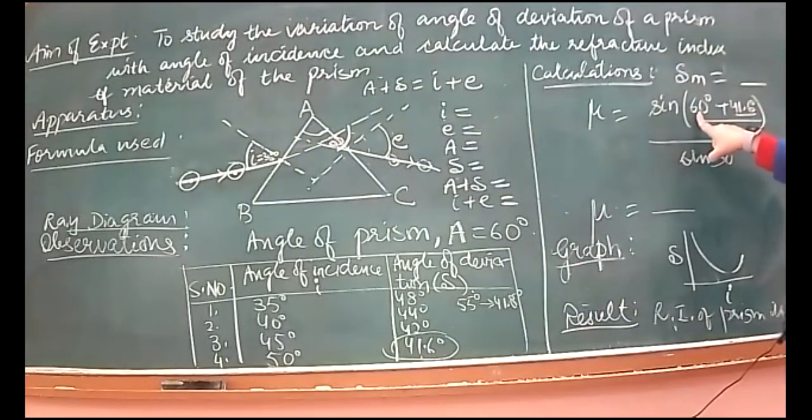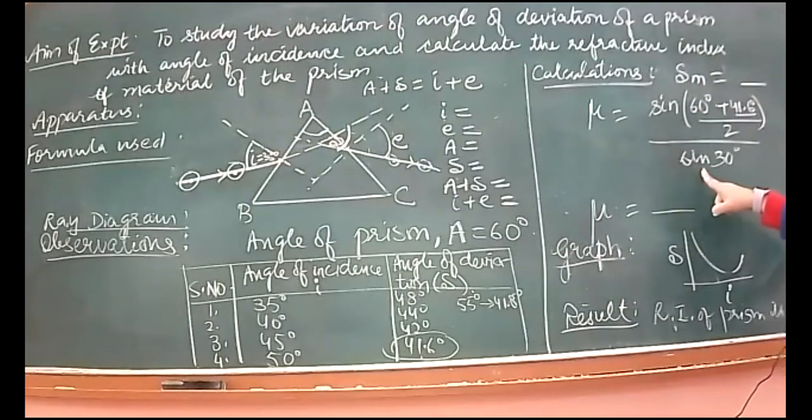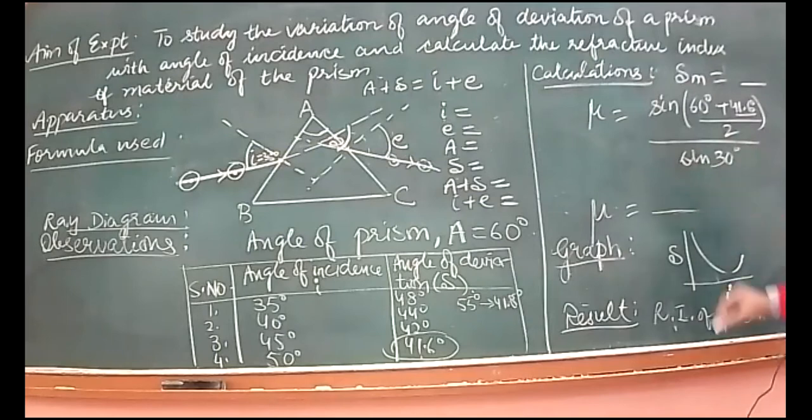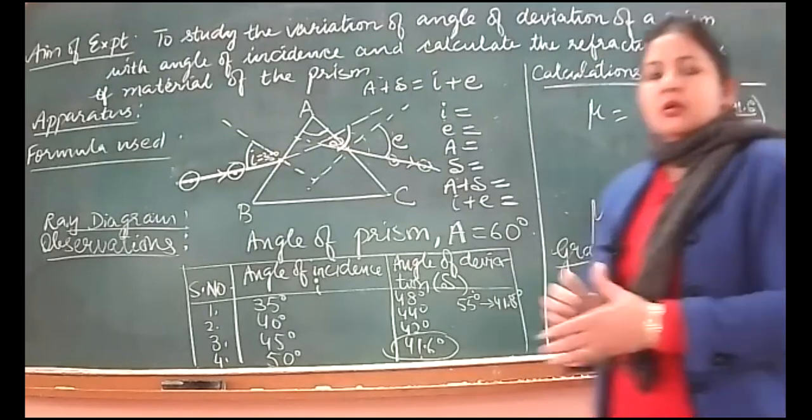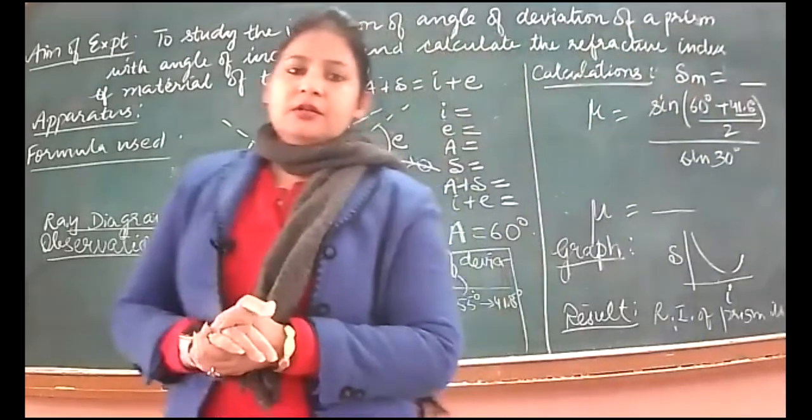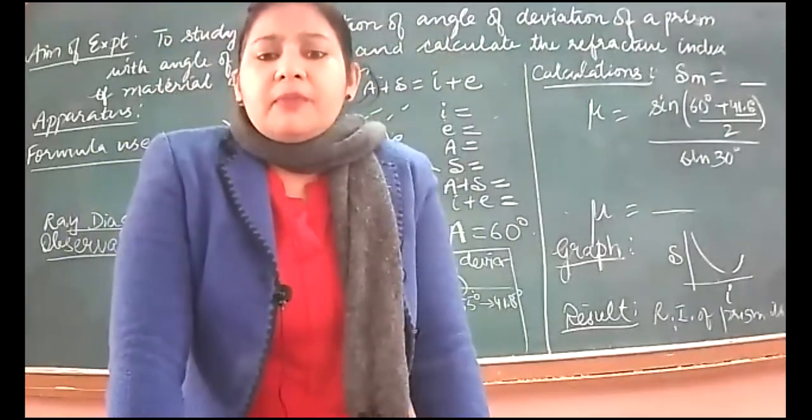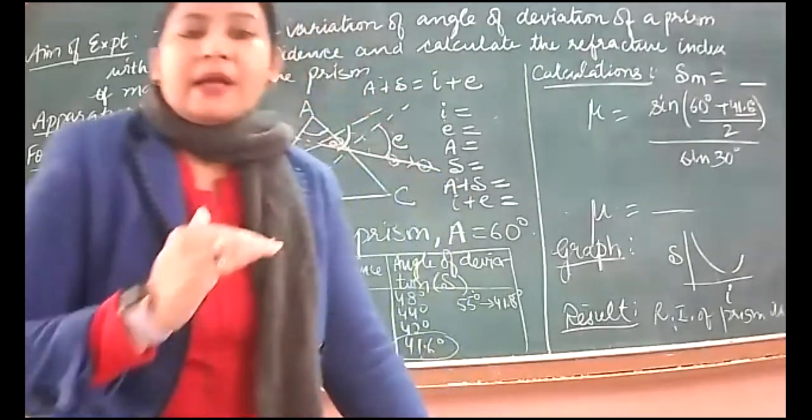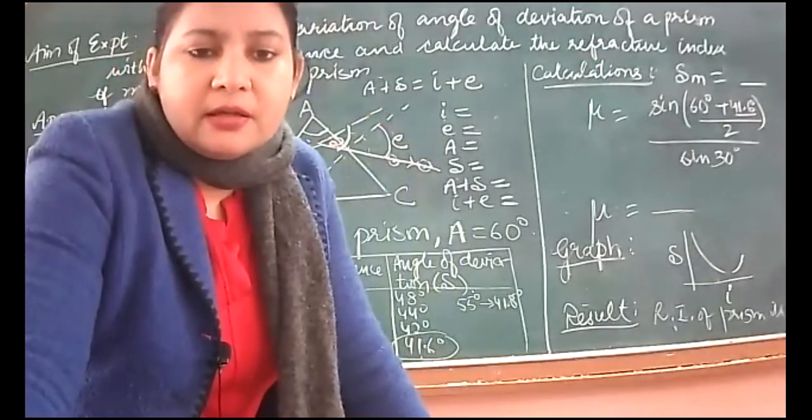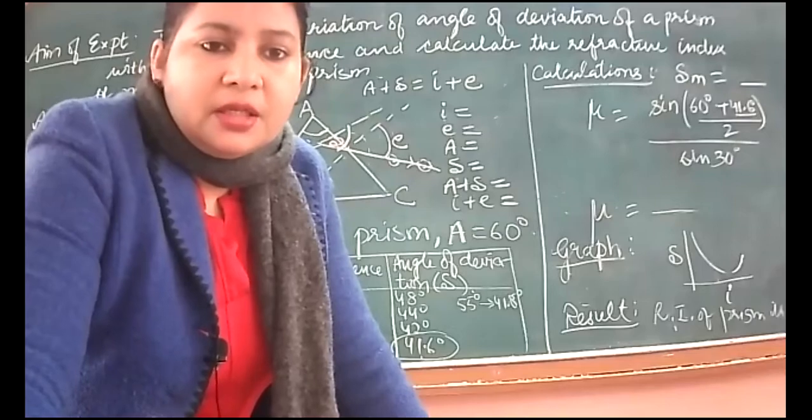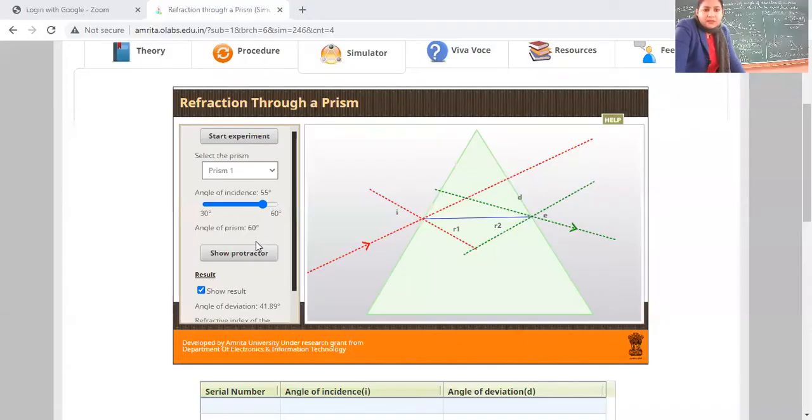So in this case we put 41.6 degrees. This gives 101.6 degrees over 2, and the sine value you can look up in the table, over sine 30 degrees which is 1 by 2. So in the calculation, you have to put only one angle of deviation, which is the angle of minimum deviation, for which the refracted ray becomes parallel to the base, almost parallel to the base. Let's check whether this is happening in the simulator.